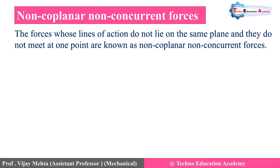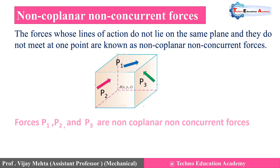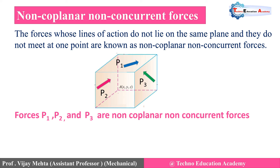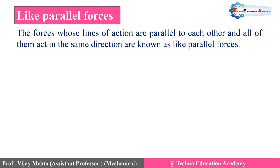The next type is non-co-planar non-concurrent forces. The forces whose line of action do not lie on the same plane and they do not meet at one point are known as non-co-planar non-concurrent forces. Forces P1, P2, and P3 do not meet at one point — non-concurrent — and their line of action is on different planes — non-co-planar. An example is a table, where forces act on different legs in different planes and do not meet at one point.